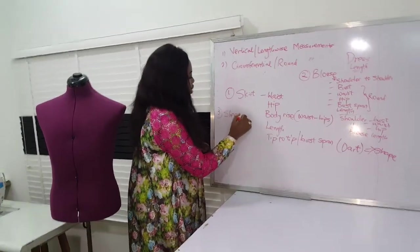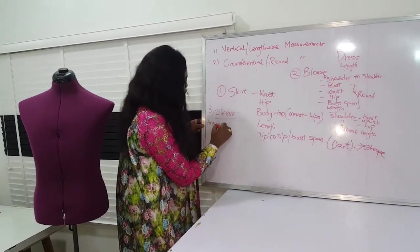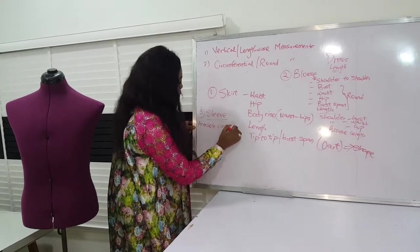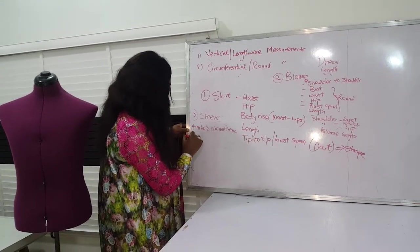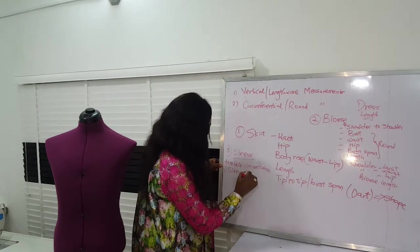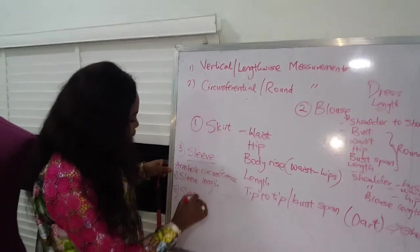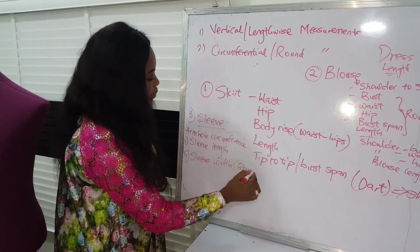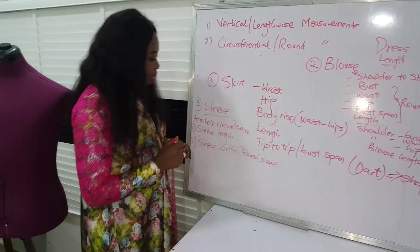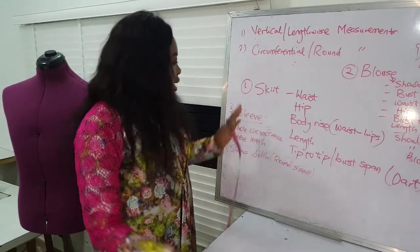For sleeve measurements, we need the armhole circumference, the sleeve length, and the sleeve width — some persons call it the round sleeve. These are the three measurements for sleeves.